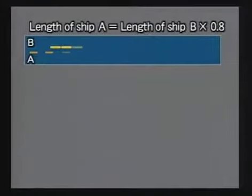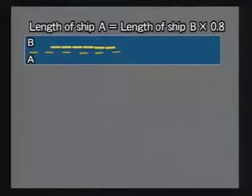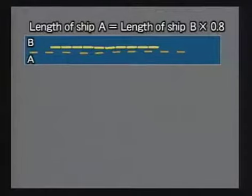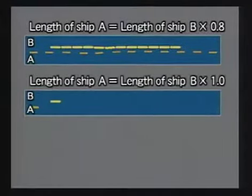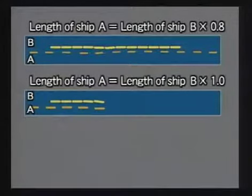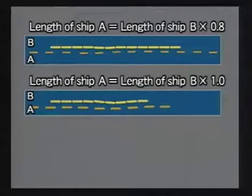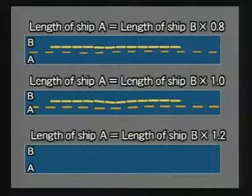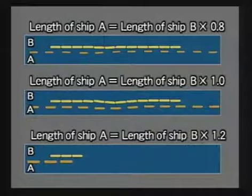In this case, the length of ship A is 0.8 times that of ship B. Now let the lengths of the two ships be the same. Now let the length of ship A be 1.2 times that of ship B.